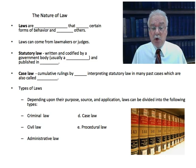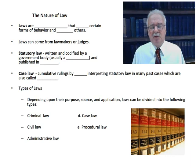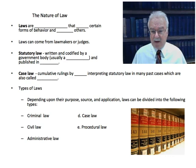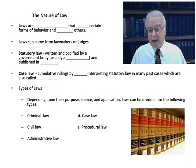Case law consists of the cumulative rulings by judges interpreting statutory law in many past cases. These past cases where they interpret the law are called precedents. It's the job of the courts to interpret the law when the meaning is not clear — somebody might challenge a law as unconstitutional, or the courts might have to rule on the meaning of a certain word. Higher courts' rulings become legal precedents, and future courts are supposed to abide by them. Precedents can be overturned, but the longer a precedent stays in effect, the more it becomes set in stone.